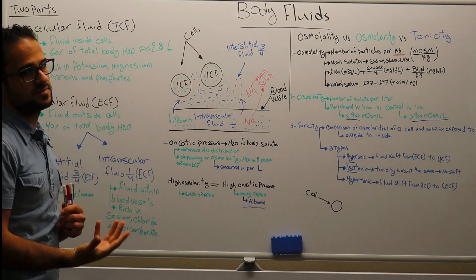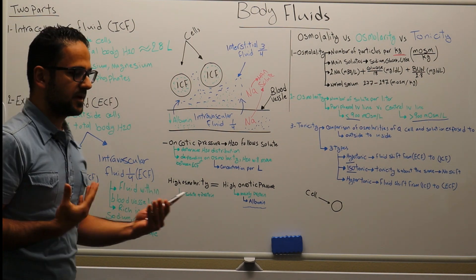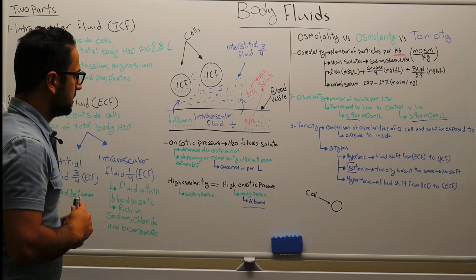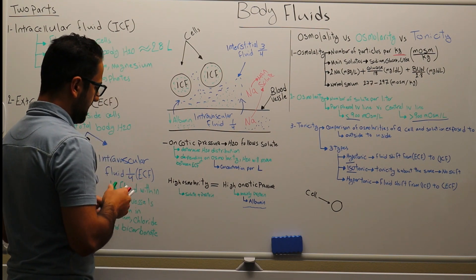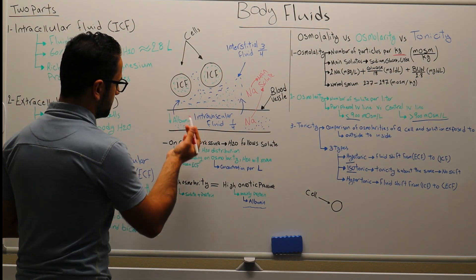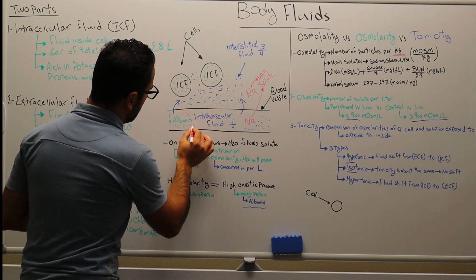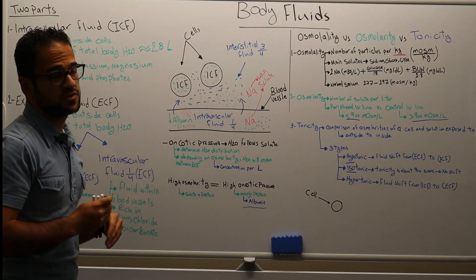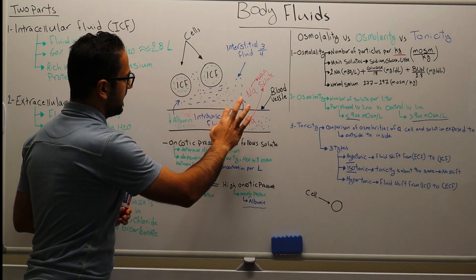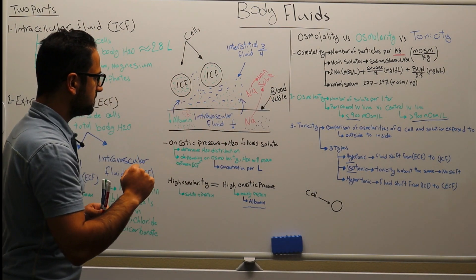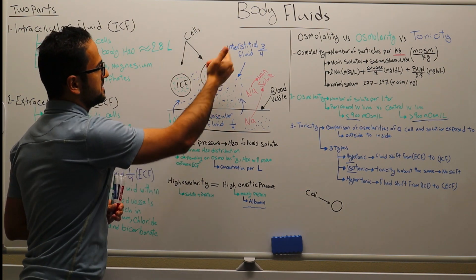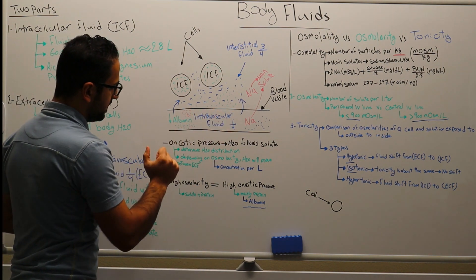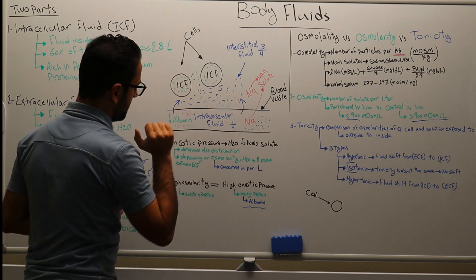This all depends on osmolarity. Osmolarity is basically the concentration of solute per liter, so it's based on volume. If we're having a higher osmolarity, that means we're having a higher concentration of solutes. Therefore, water will be mainly in the intravascular fluid, and we can say that higher osmolarity in the intravascular fluid equals higher oncotic pressure in the intravascular fluid.